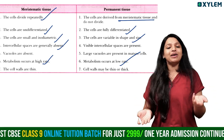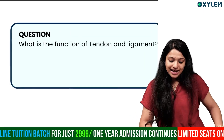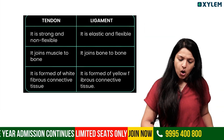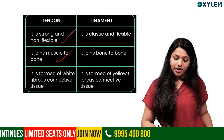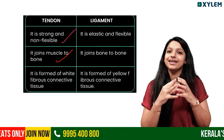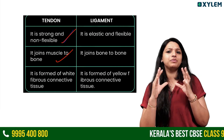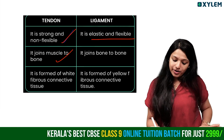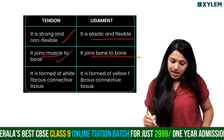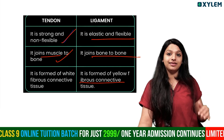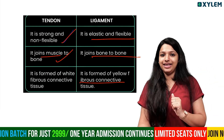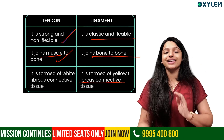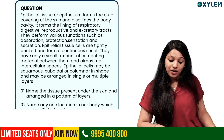Next question: what is the function of tendon and ligament? Tendon is strong and not flexible and connects muscles to bone — it is a white fibrous connective tissue. Ligament is elastic and flexible and connects bone to bone — it is a yellow fibrous connective tissue.